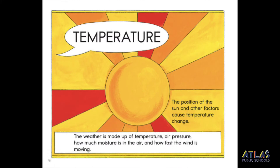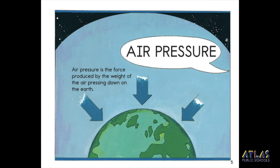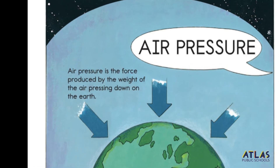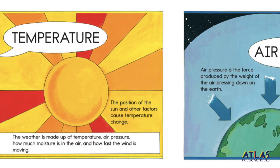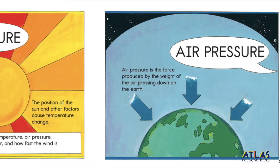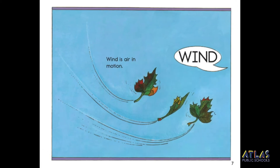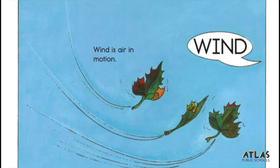Temperature. The weather is made up of temperature, air pressure, how much moisture is in the air, and how fast the wind is moving. The position of the sun and other factors cause temperature to change. Air pressure is the force produced by the weight of the air pressing down on the earth. Both temperature and air pressure play into how weather changes from day to day. Moisture in the air comes from water that evaporates mostly from the oceans. Wind is air in motion.